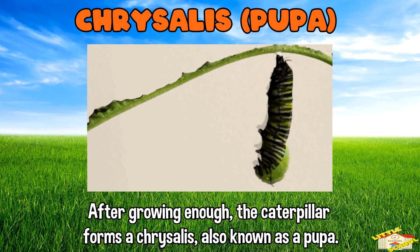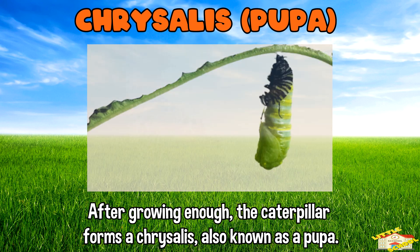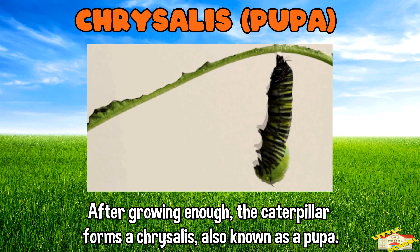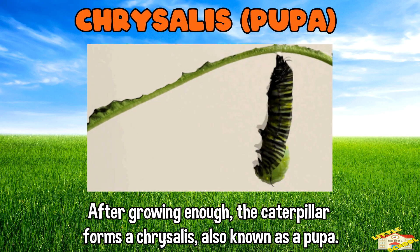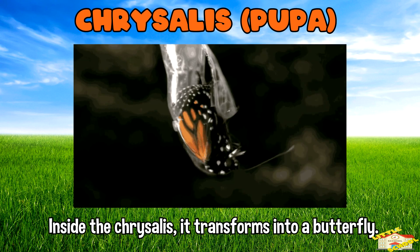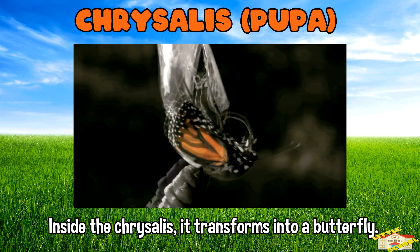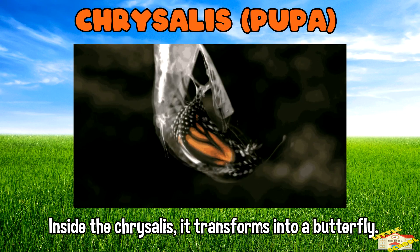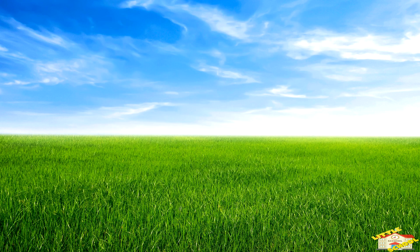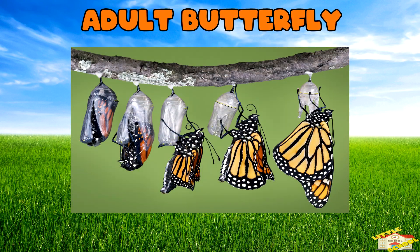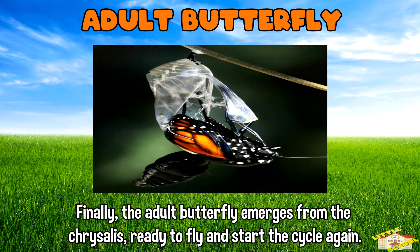Chrysalis: after growing enough, the caterpillar forms a chrysalis, also known as a pupa. Inside the chrysalis, it transforms into a butterfly. Adult butterfly: finally, the adult butterfly emerges from the chrysalis, ready to fly and start the cycle again.